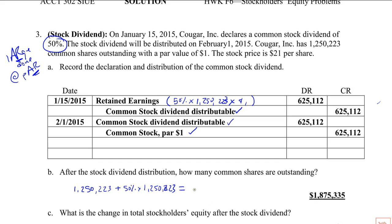Another way to think about it, or an easier way to get there: take one, add it to the dividend percent, and multiply it times the number of shares outstanding. So you have increased dramatically the number of shares outstanding, and you've transferred an amount from retained earnings.